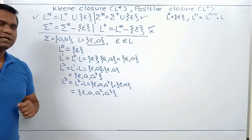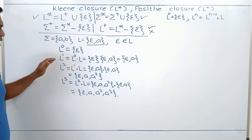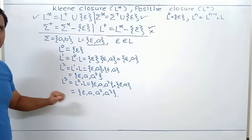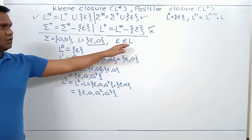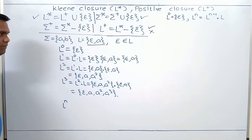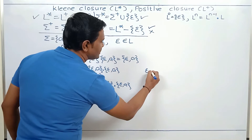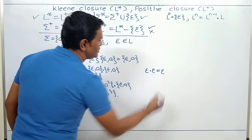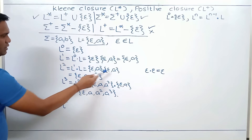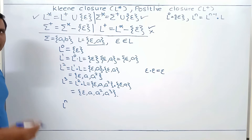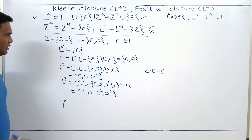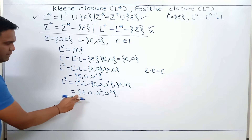The important thing to notice here is that L^0 contains epsilon, L^1 contains epsilon, L^2 contains epsilon, and L^3 also contains epsilon. So if epsilon belongs to L, then for any L^n, while calculating L^n, it will include epsilon dot epsilon to get epsilon. For any L^n, this calculation will involve epsilon, and you will get epsilon in L^n.